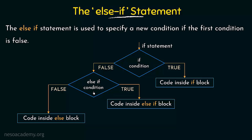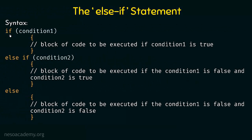Let us see the syntax. We start with the if condition — if and then within parentheses we write the condition. If this condition is true, the block of code for condition 1 is executed. If it is not true, we come to else if, which also has a condition — condition 2. If condition 2 is true, the block of code executed is the one for when condition 1 is false and condition 2 is true. If condition 2 is also false, the else statement executes, handling the case where both condition 1 and condition 2 are false. This is the syntax for the else if statement in C++.